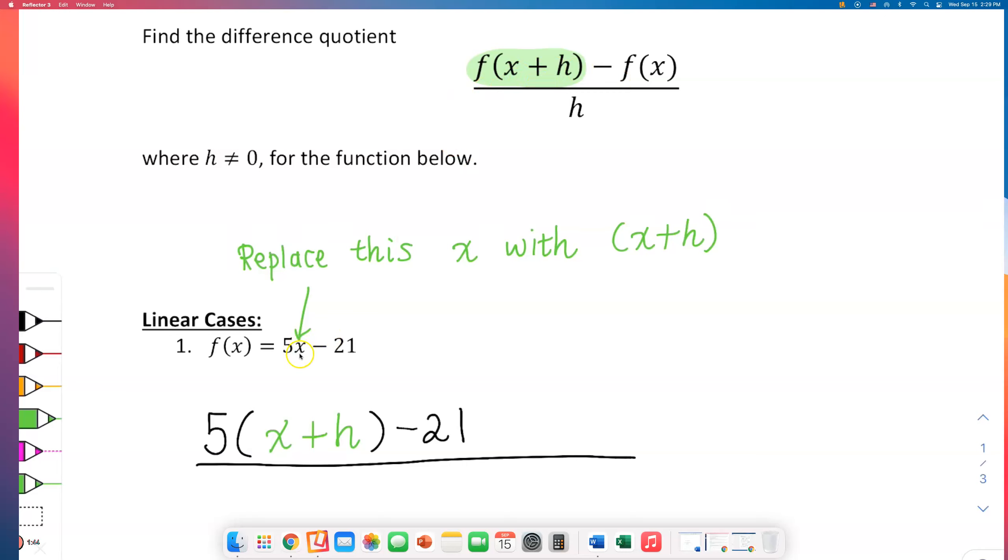That is how you find this green highlighted part. If you see an x, just replace it with parenthesis x plus h, close out parenthesis. What I just did is only the green circle part. I only did the green circle part, so I need to continue.